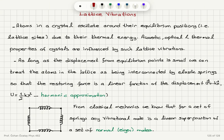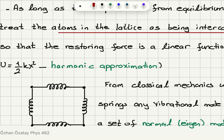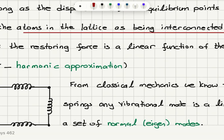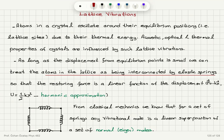Basically, we are considering atoms in the lattice as being interconnected by elastic springs. If you look at such a model — for example, if you have a square lattice — you can see all the atoms are connected by these elastic springs. A problem like this in classical mechanics would give us vibrational modes of oscillation, and we know that this will be a linear superposition of a set of normal or eigenmodes of oscillation. Our task would be to determine what these eigenmodes are.